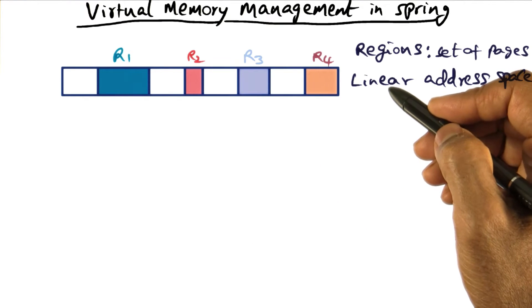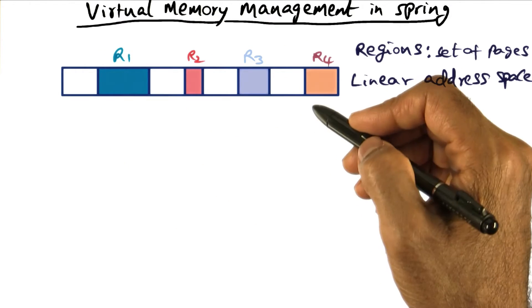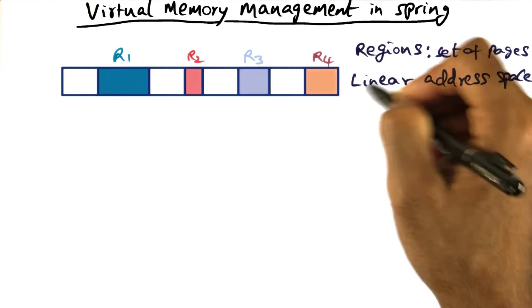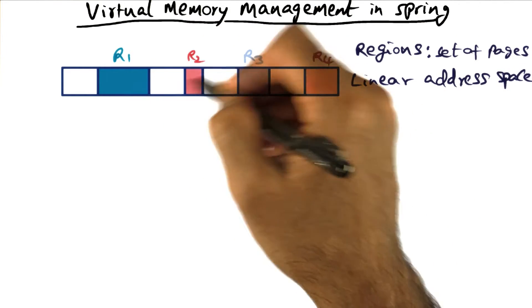So you take this linear address space given by the architecture, that's the process address space, break that up into regions where each region is a set of pages. And each region can be of different sizes.